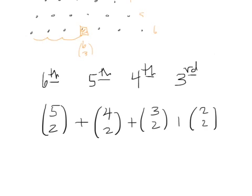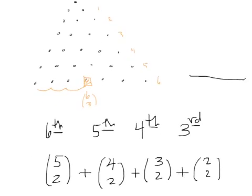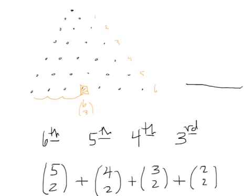But that doesn't explain the one with the one. What we're doing is we are adding up this hockey stick. We did account for this point, and the way we did it was two choose two, plus three choose two, plus four choose two, plus five choose two. We add up all four of these to get six choose three.